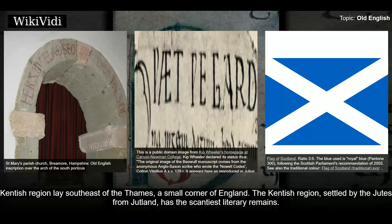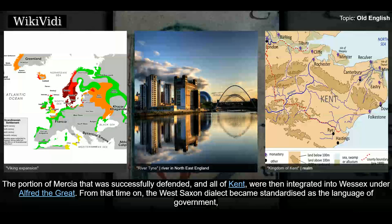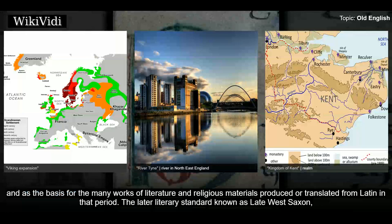The Kentish region, settled by the Jutes from Jutland, has the scantiest literary remains. Each of these four dialects was associated with an independent kingdom on the island. Northumbria south of the Tyne, and most of Mercia, were overrun by the Vikings during the 9th century. The portion of Mercia that was successfully defended, and all of Kent, were then integrated into Wessex under Alfred the Great. From that time on, the West Saxon dialect became standardized as the language of government and the basis for the many works of literature and religious materials produced or translated from Latin in that period.